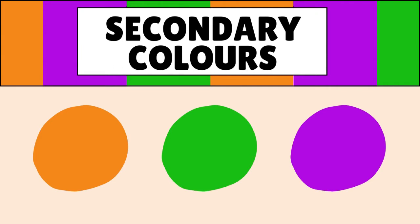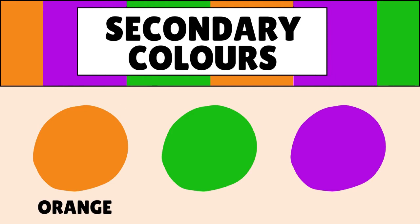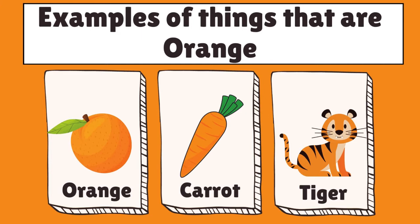Okay students, you can see on the screen that there are three different secondary colors. Let's start off with the color on the left side. Can you guess what color the arrow is pointing? That's right, that's the color orange. And here are examples of things that are orange in color. Let's go and review them together. First, we have the fruit orange.